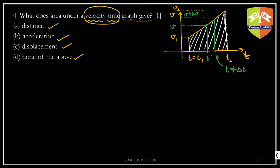In the duration delta t, the velocity increases by some value delta v. So this point is v plus delta v. Now this particular small region — let's name the four corners A, B, C, D — looks like a trapezium. ABCD is a trapezium.